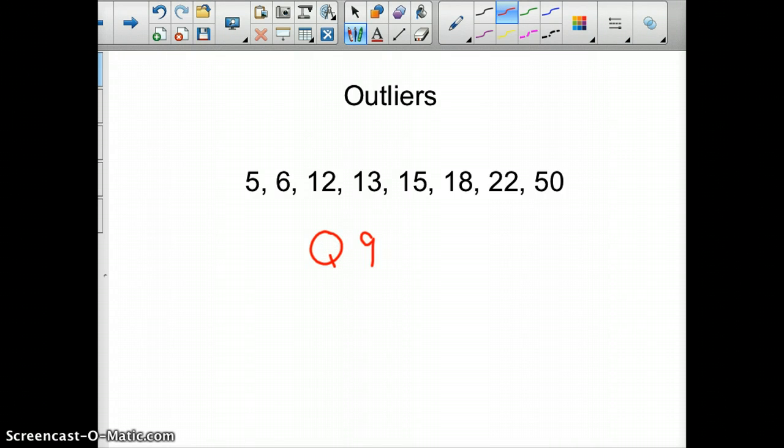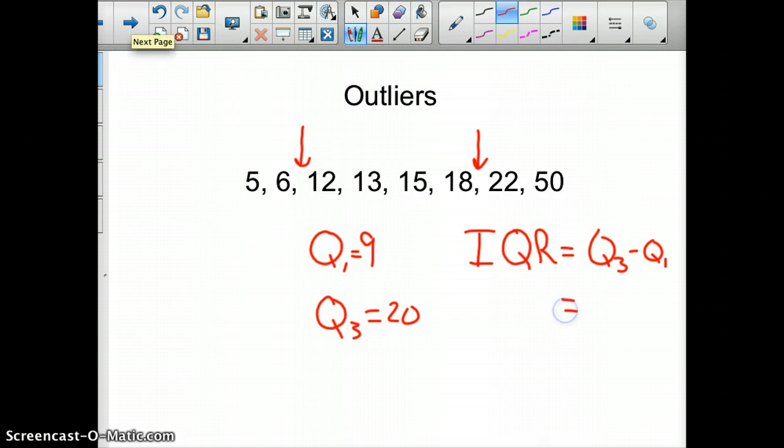Quartile 1 is 9, quartile 3 is 20. So 9 falls right here, 20 falls right here. To find outliers, you find what's called your interquartile range, or IQR. Your interquartile range is simply taking Q3 minus Q1. So in our case, 20 minus 9.